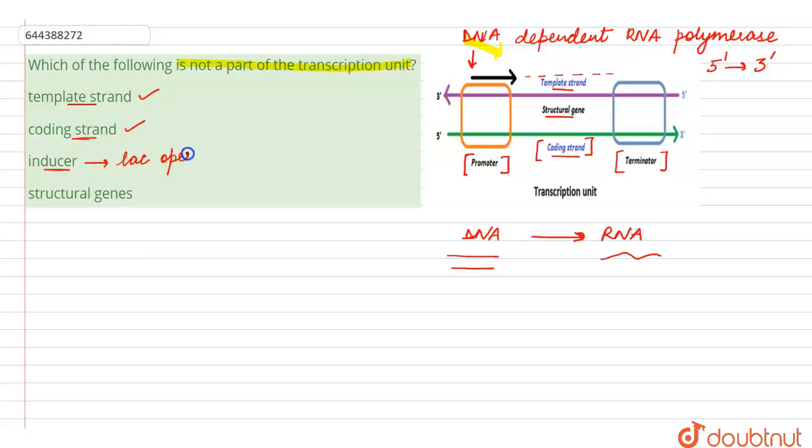Inducer is a part of the lac operon where lactose acts as an inducer to switch on the operator. Whenever inducer is present, there will be switching on of the lac operon. Structural genes are also present in the transcription unit.